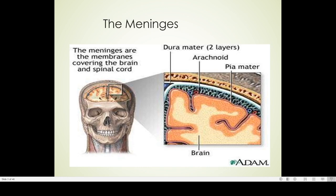Here is an enlarged picture. You can see the brain substance, and closely investing the brain substance is the pia mater. Above that is the arachnoid mater, and over here you can see the dura mater, which has two layers: the outer endosteal and the inner meningeal, the details of which we will be talking about.